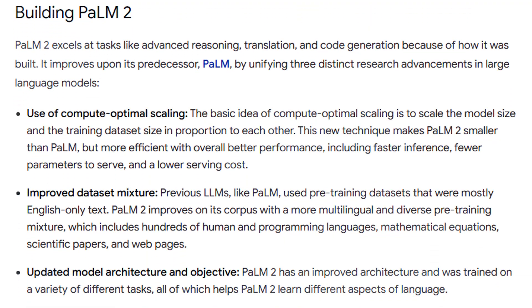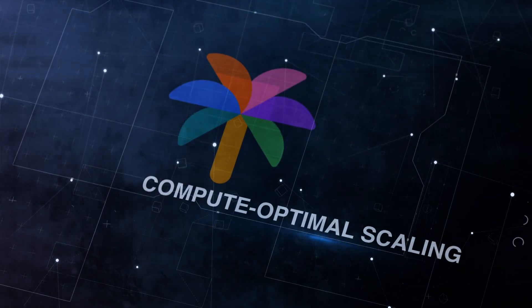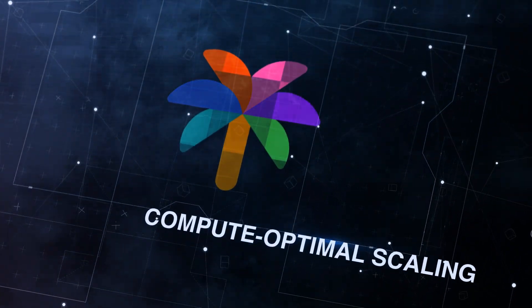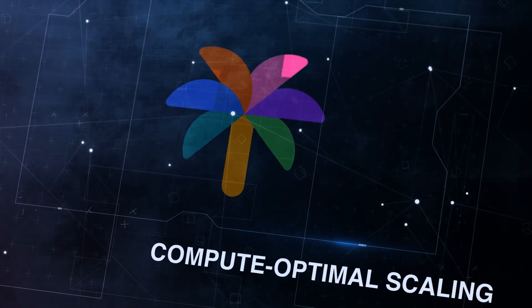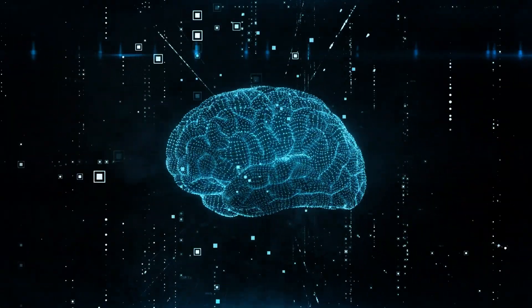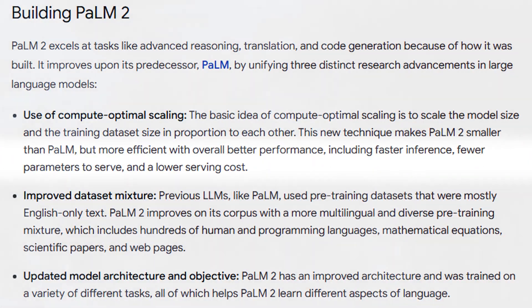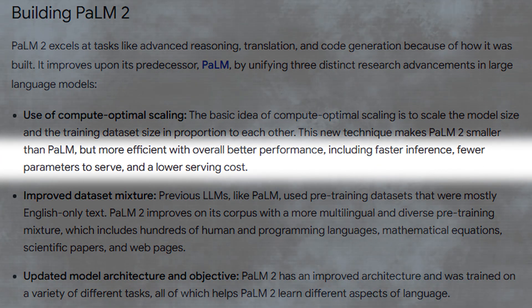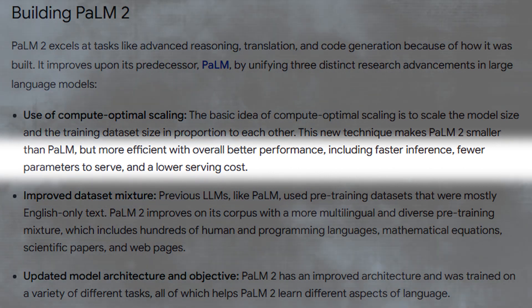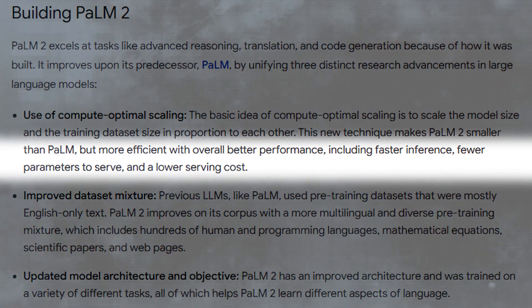Number 1: POM2 uses Compute Optimal Scaling. The core concept behind Compute Optimal Scaling is to adjust the model's size and the training dataset's size in harmony. This ensures that POM2 is smaller than its predecessor, POM, while being more efficient and delivering enhanced overall performance. This includes quicker inferences, fewer parameters to manage, and reduced operational expenses.